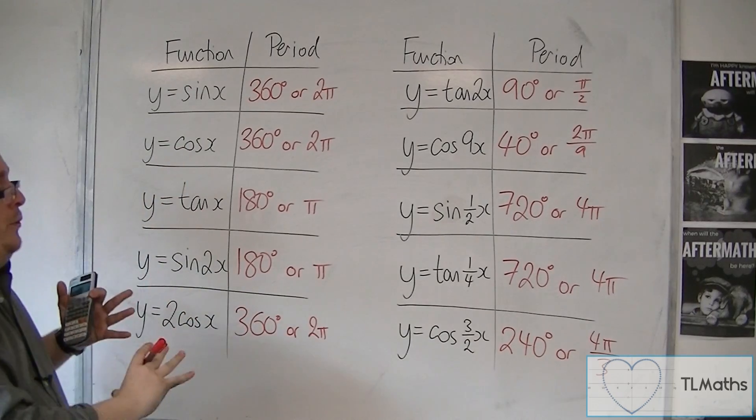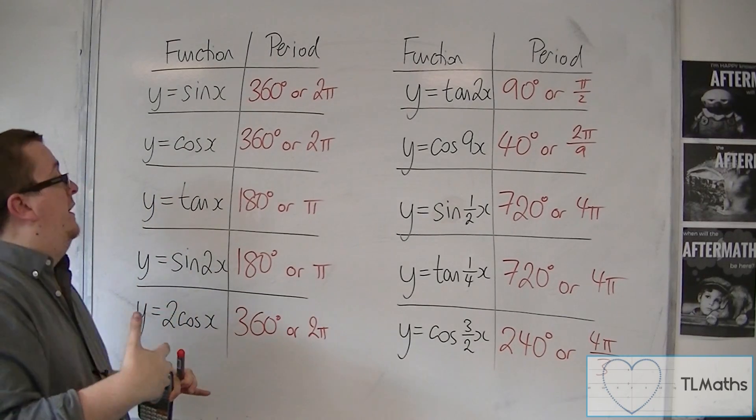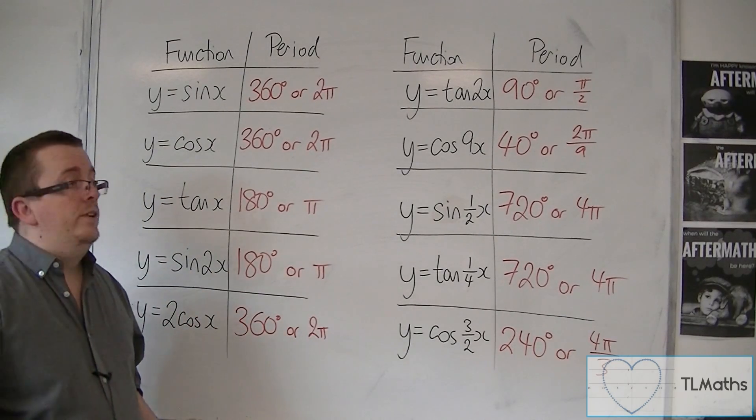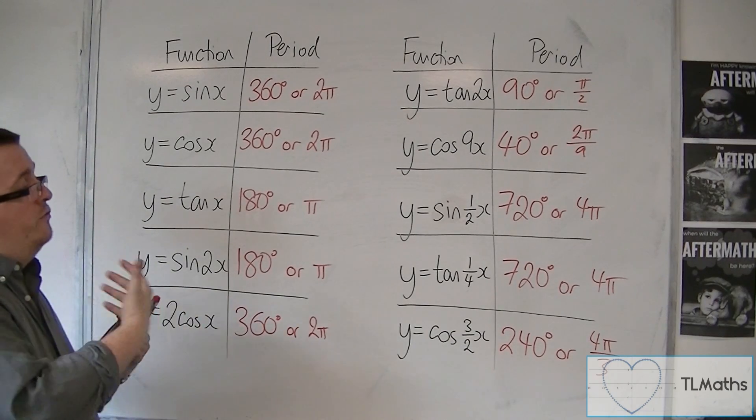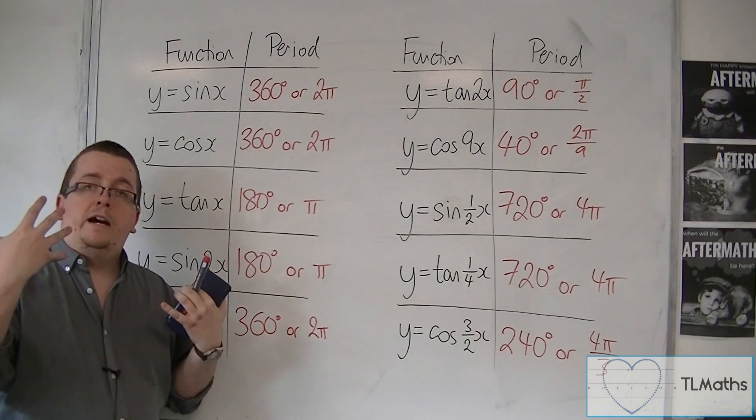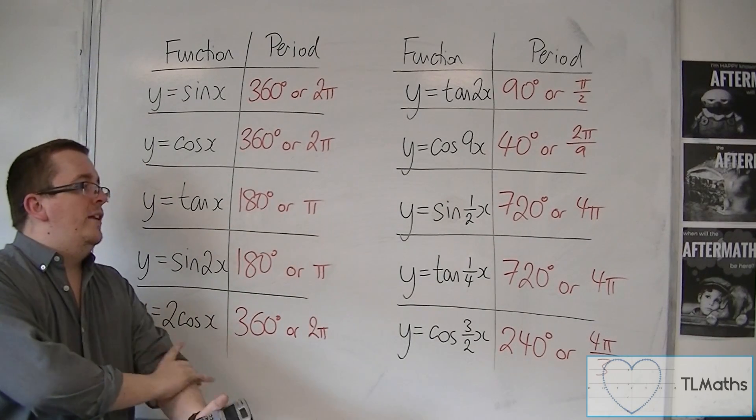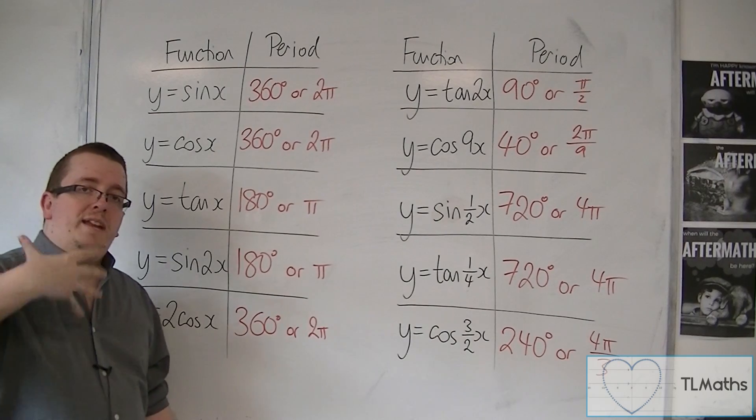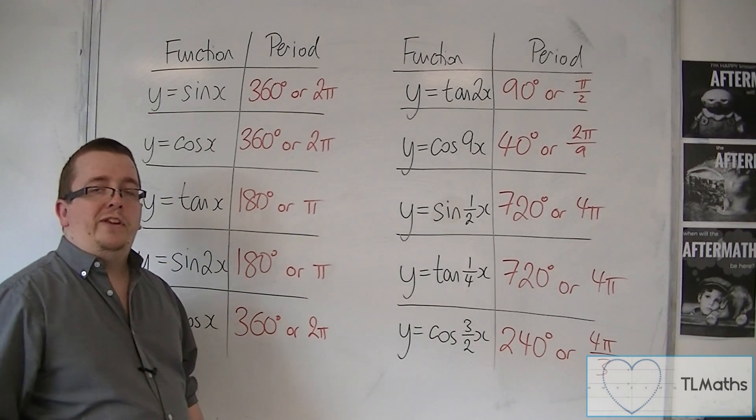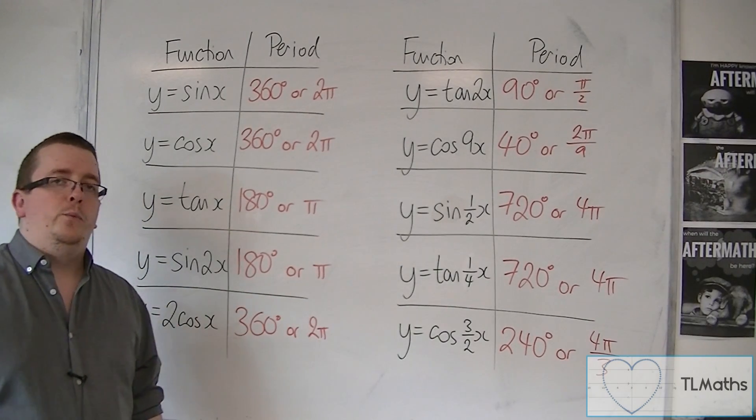And this is going to become very important when solving things like sine 2x equals a half, or cos of 3x equals 1 ninth, or something like that. We need to know how to find the period, because that's going to enable us to then find the solutions, all the solutions that we need to get.